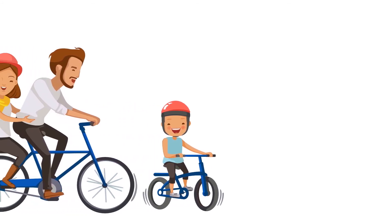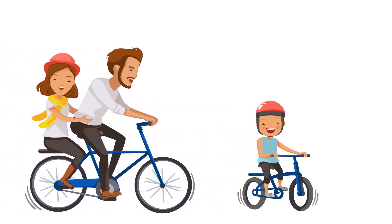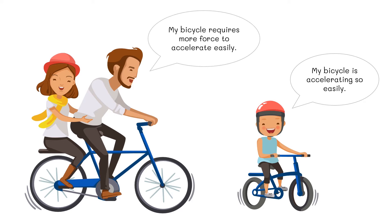To help us understand this better, let's take this example. The boy at the front has to apply less force to accelerate the bicycle since he has less mass. The man at the back needs to apply more force to accelerate the bicycle because of the added mass of the woman.